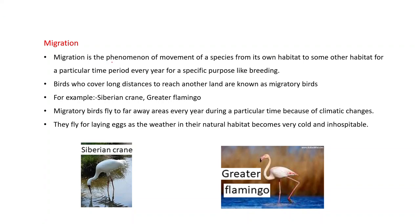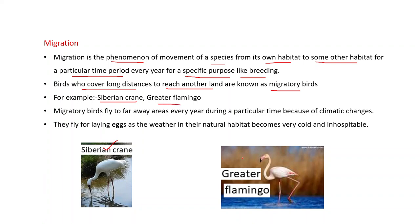Migration is the phenomenon of movement of a species from its own habitat to some other habitat for a particular time period every year, for a specific purpose like breeding. Birds that cover long distances are known as migratory birds — for example, the Siberian Crane and Greater Flamingo. Migratory birds fly to far-away areas during a particular time because of climatic changes, especially to lay eggs when their natural habitat becomes very cold and inhospitable.